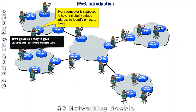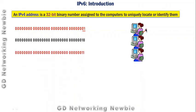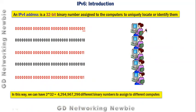IPv4 gave us a way to assign addresses to these computers. In IPv4 we have 32 bits, and these 32-bit binary numbers are used to assign addresses to users. We can use different combinations of these 32 bits — the first combination to one user, the next to another, and so on. At maximum we can have 2 raised to power 32, which is about 4 billion addresses that can be assigned to different users.